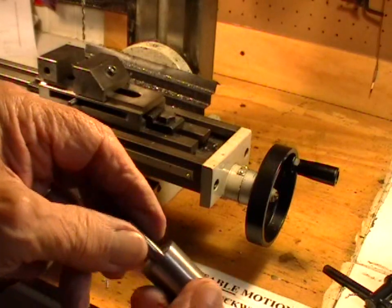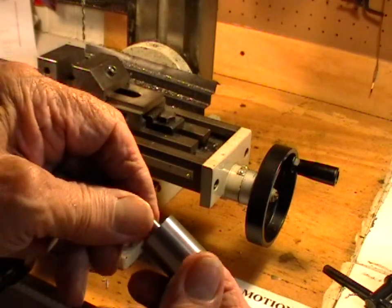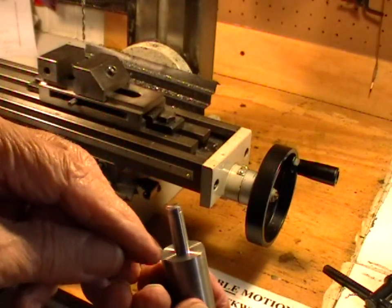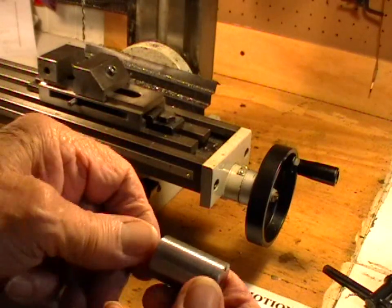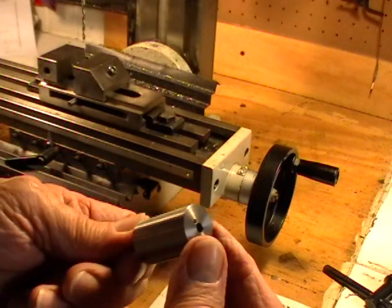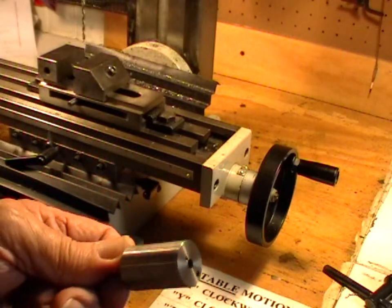The point being that then I haven't moved it at all in the chuck and I get the eccentric distance exactly the same, with the same relationship to the crank pin hole.